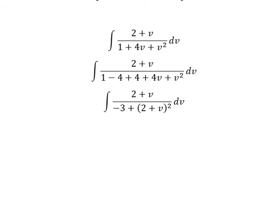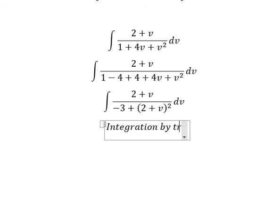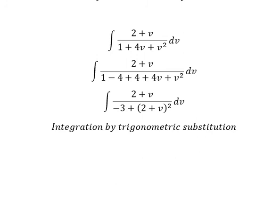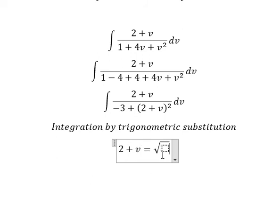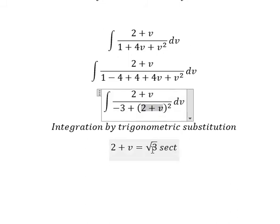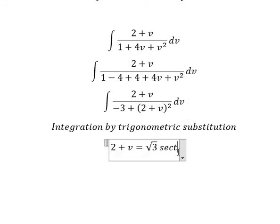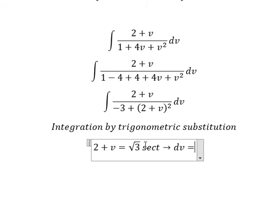So in this situation, I will use integration by trigonometric substitution. So I will put 2 plus v equals to the square root of 3 times secant of t. So if we put this one in here, you will have 3 secant squared of t. Number 3 with number 3, we can do factorization. Secant squared of t minus 1, we change to tan squared of t and then simplify by dv. This one we do first derivative for both sides. We have dv equals to the square root of 3 secant of t times tan t dt.